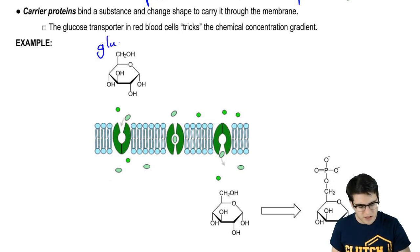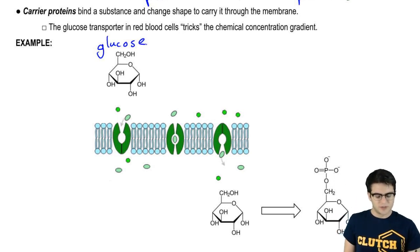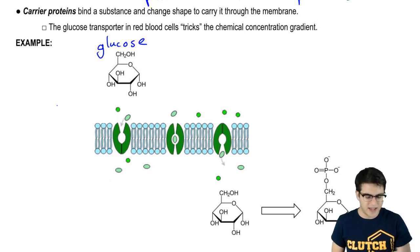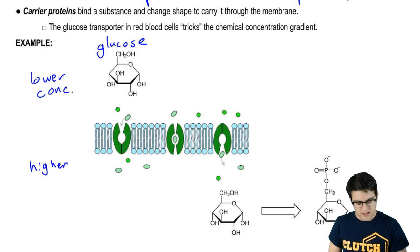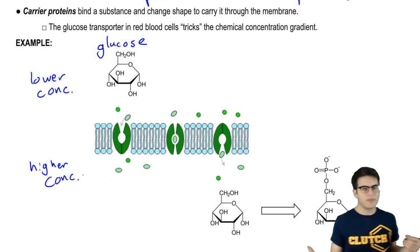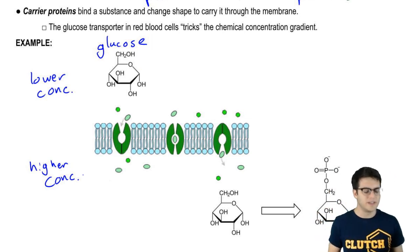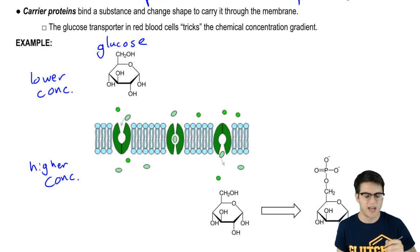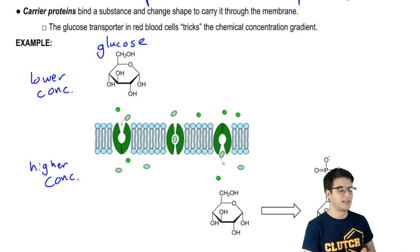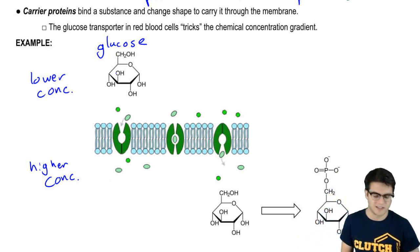So here we have glucose molecules, and glucose actually has a lower concentration outside of cells than it does inside. So it has a higher concentration inside. So how the heck can these carrier proteins bring the glucose from the side where it's at a lower concentration to the side where it's a higher concentration?